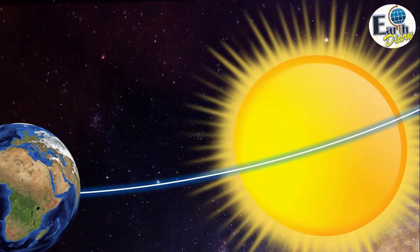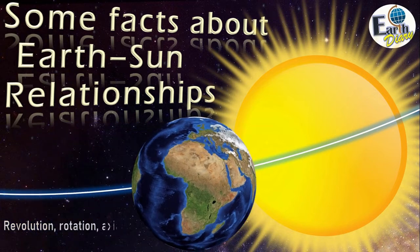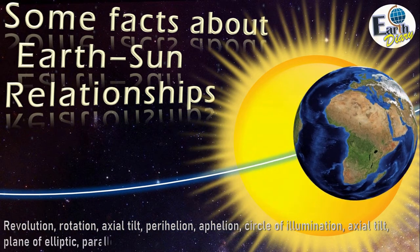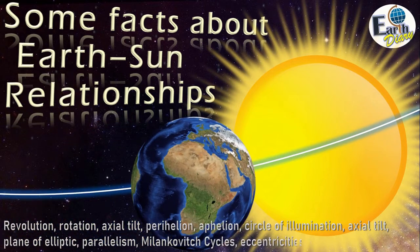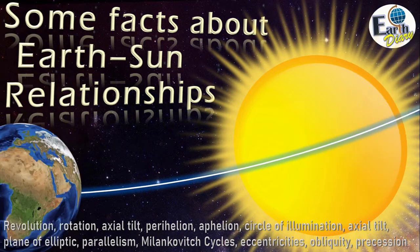In this video, we will review some facts about Earth-Sun relationships, like revolution, rotation, axial tilt, perihelion, aphelion, circle of illumination, plane of ecliptic, parallelism, Milankovitch cycles, eccentricities, obliquity, and precession.